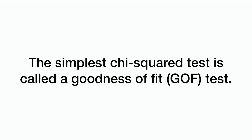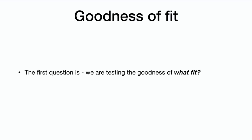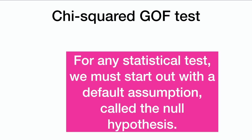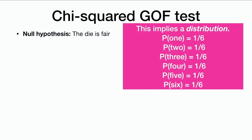The simplest chi-squared test is called a goodness-of-fit test. We are testing that a certain distribution fits the observed data. For any statistical test, we start with a default assumption called the null hypothesis. For our die, our default assumption is that it's a regular, fair die — each option has probability 1 out of 6. When we have the null hypothesis that the die is fair, this implies a distribution where the probability of every outcome is 1 out of 6.